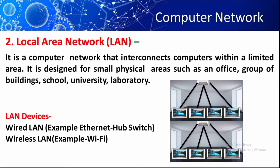Several computers can be connected to each other by Ethernet. The devices we use in wired LAN are hub and switch. Local area network can also be wireless — an example is Wi-Fi. Now we'll discuss the advantages of local area network.